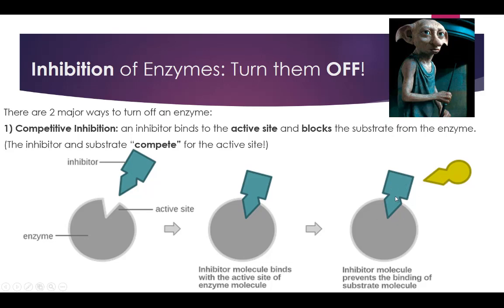Your body has a way to moderate this. Whenever you get low amounts of food in your stomach, some of your cells will start producing inhibitors. The inhibitors will then start binding into the enzymes and stopping them from digesting food. When you get a lot of food in your stomach, your body stops producing inhibitors. They'll eventually pop out, and when they do, the enzymes can continue on with their job of helping to break the food down.